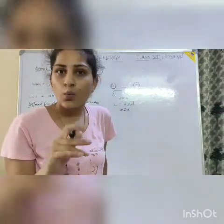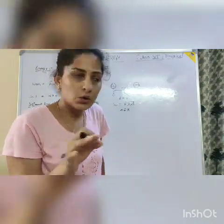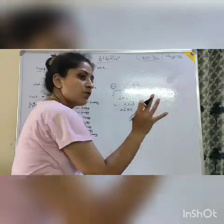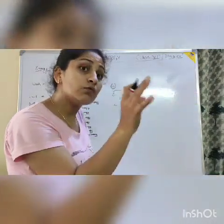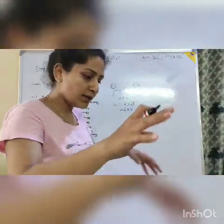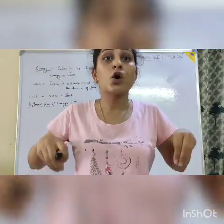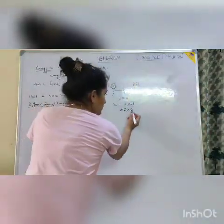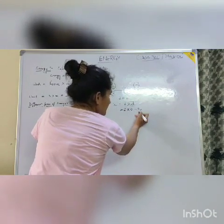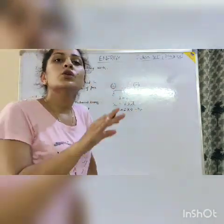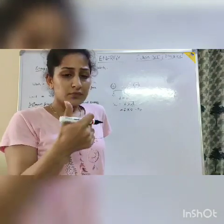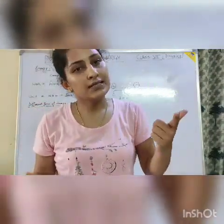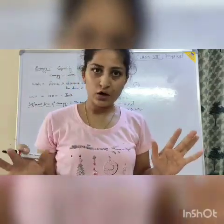Because zero multiplied by any number always gives zero. One into zero is zero; one lakh into zero is zero. So force into zero equals zero, because you pushed the wall but the wall is not moving — it is stationary because it is a rigid structure. Then force into zero means zero, and in that situation work is not done. So for work, what is necessary? Force as well as distance. Clear?